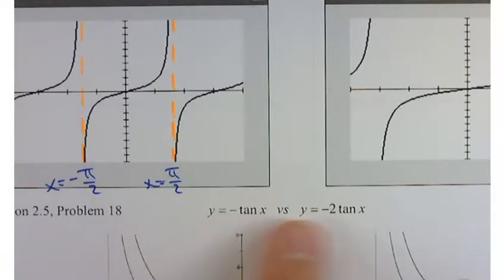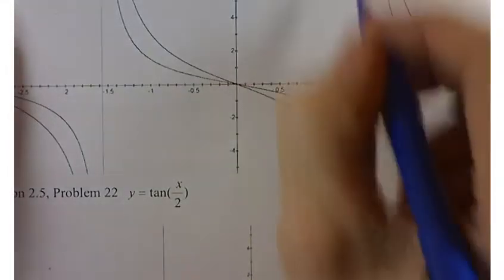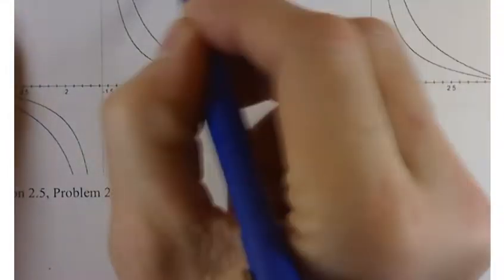And then, after I flip it, what if I put, instead of a negative 1, what if I had a negative 2? That negative 2 is going to stretch the graph. So you're going to have the same asymptotes at π over 2 and negative π over 2.